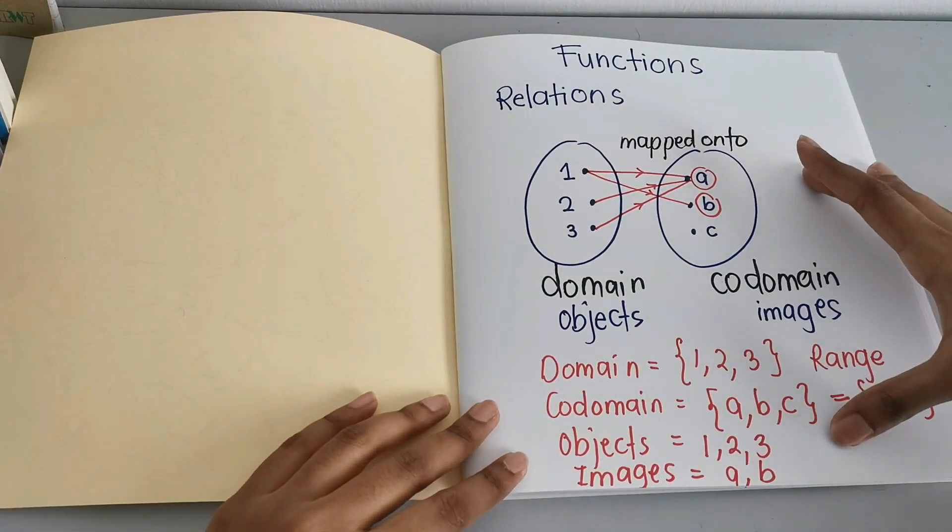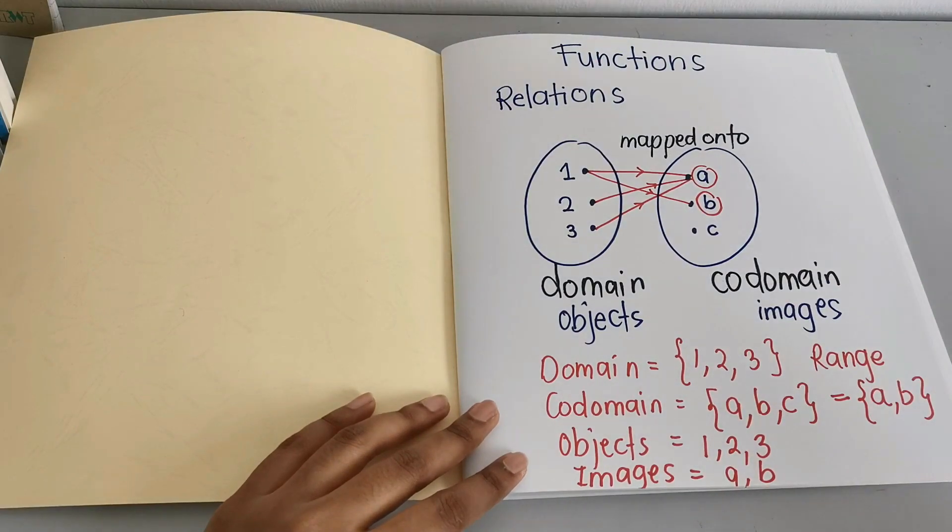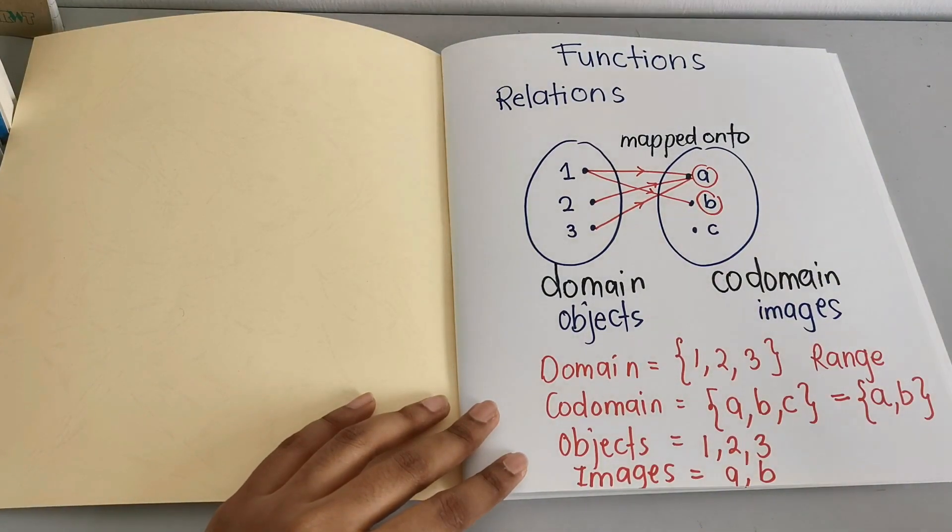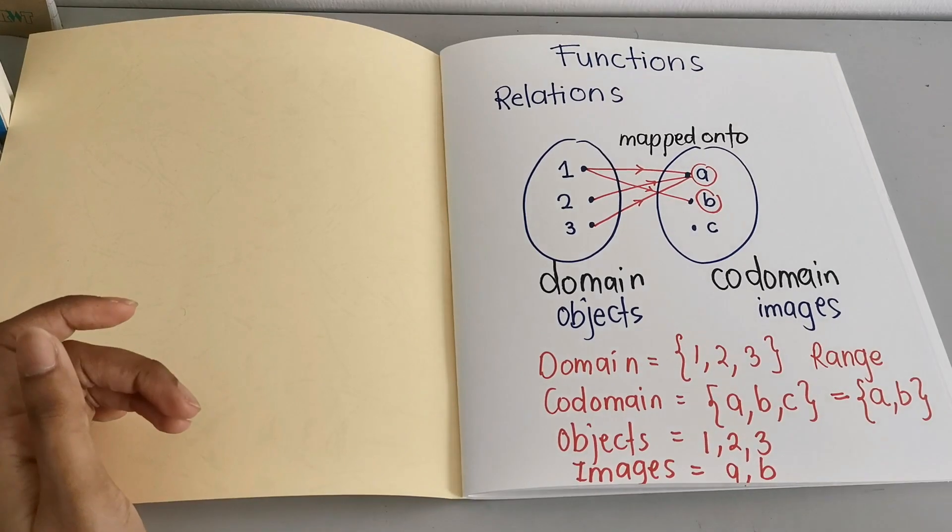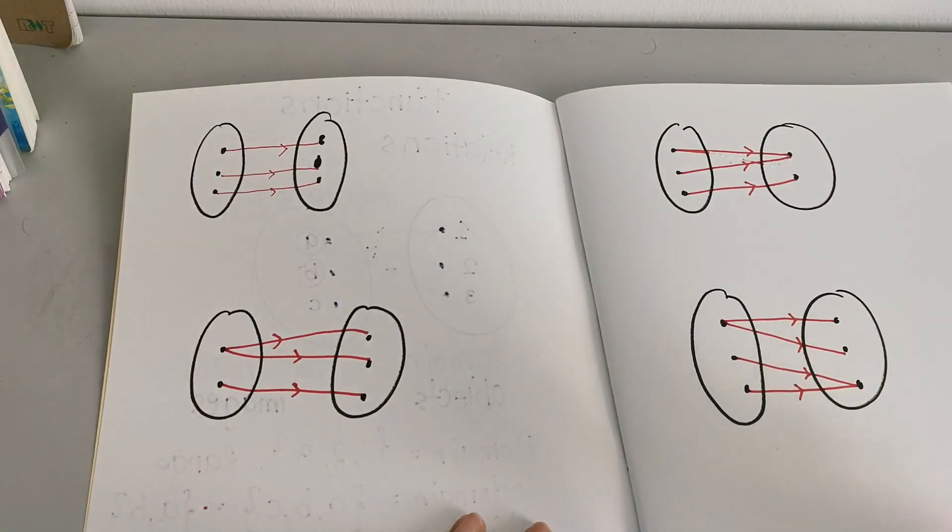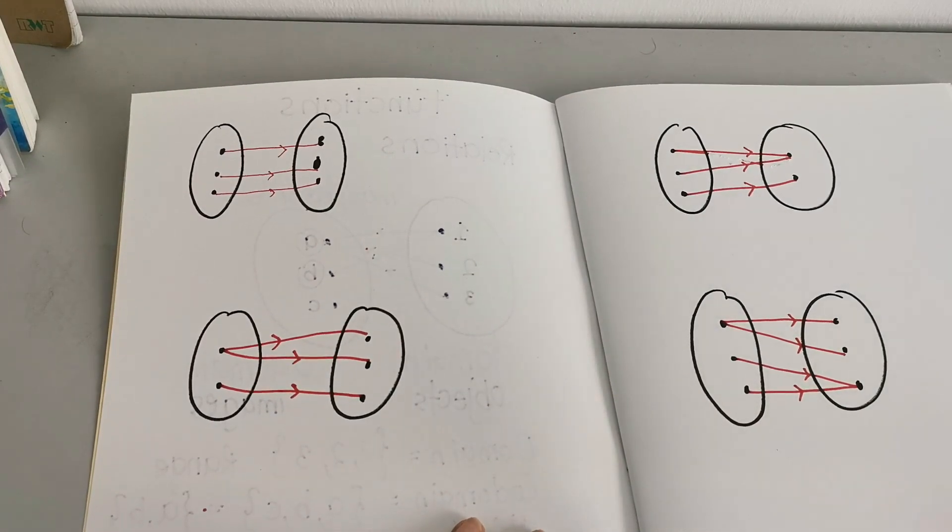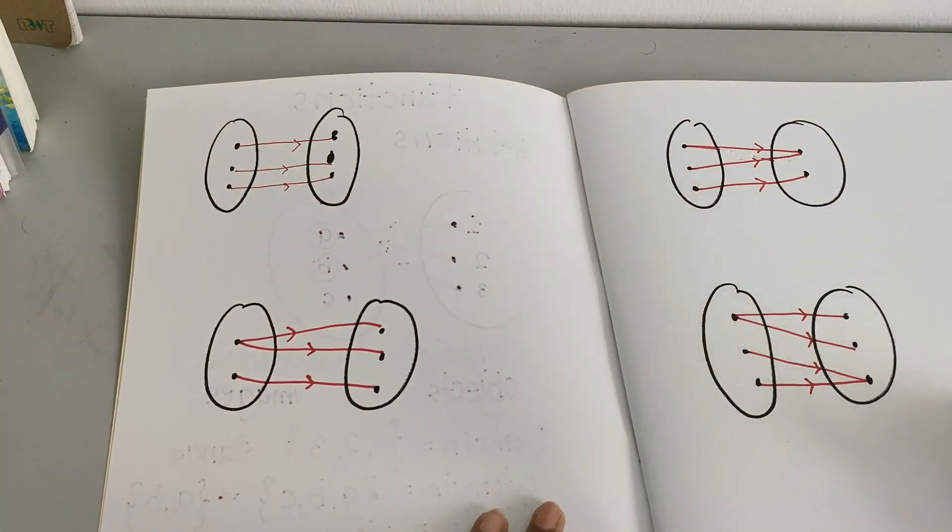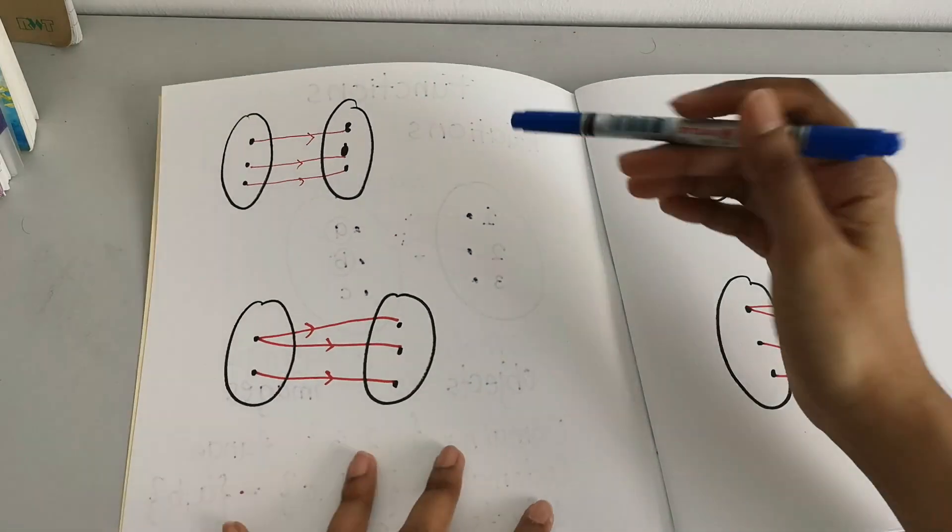So once you understand this, then we can go into the types of relation that you need to relate with. So let's go into the types of relation. Now let's look into the types of relation. You can see I have drawn 4 different diagrams here.